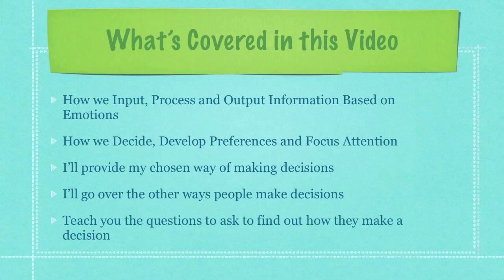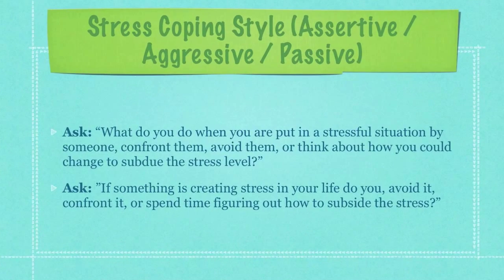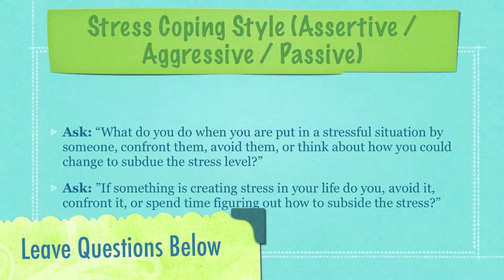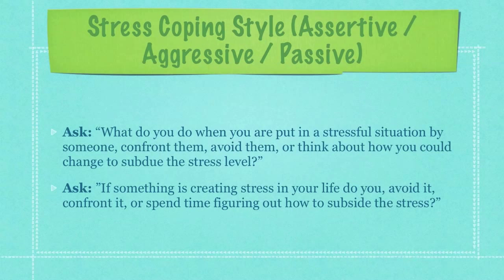First, I'm going to go over the stress coping style — simply how we cope with stress. People are either assertive, aggressive, or passive. I prefer the assertive coping style: when put in a stressful situation, I try to figure out how I can change myself to reduce the stress level. Other coping styles include the fight — the aggressives — or the flight — the passives. An aggressive person will confront what is causing stress, while a passive person will do whatever they can to get away from the stress. Nobody is purely aggressive or passive in all situations, but each person will show a preference over time. To find out what they are, just ask: what do you do when put in a stressful situation by someone? Do you confront them, avoid them, or think about how you could change to subdue the stress level?